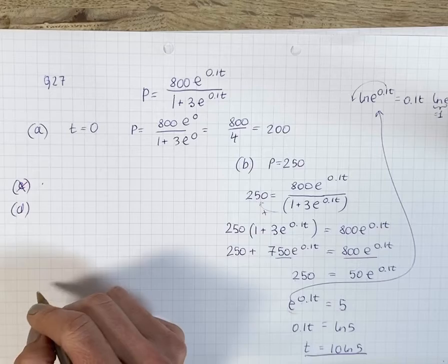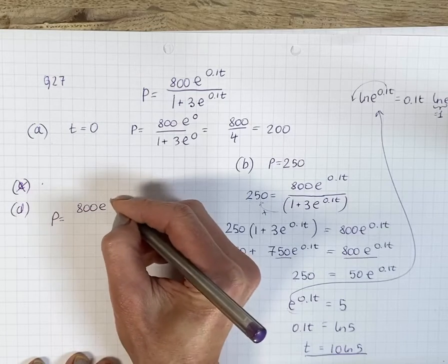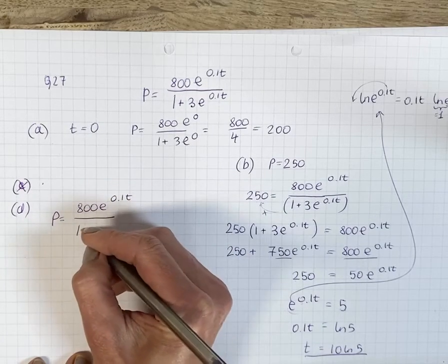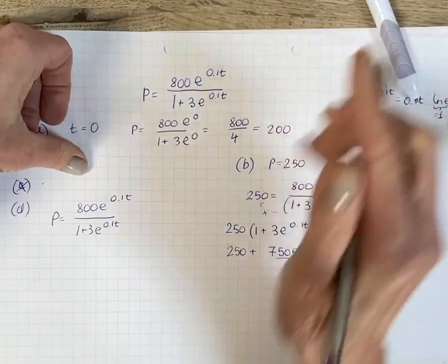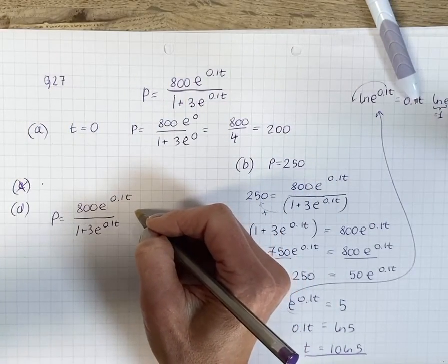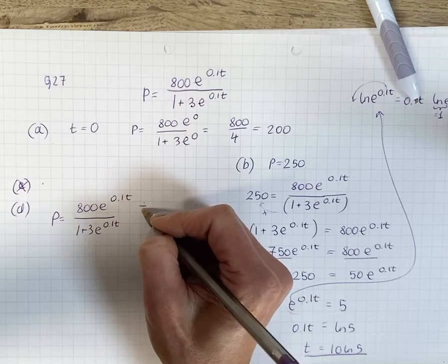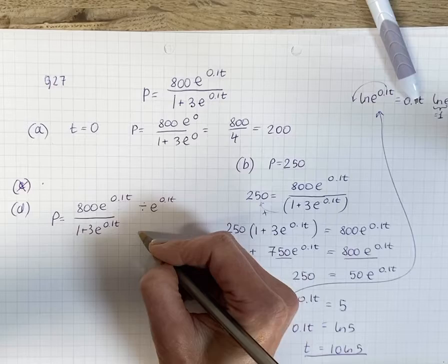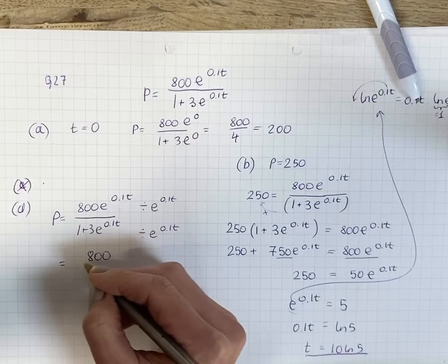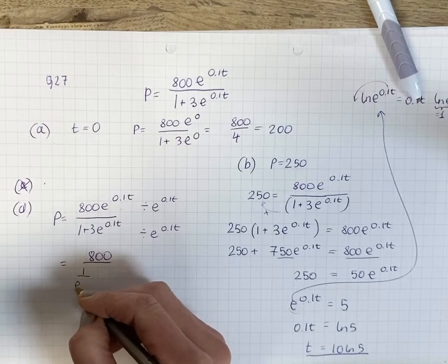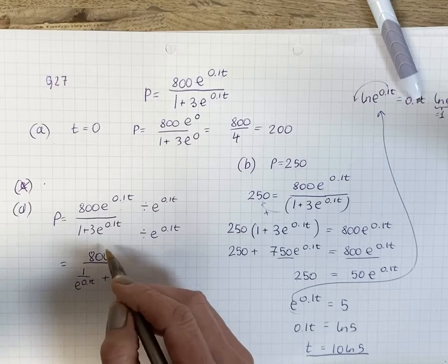So let's just do d: explain why the population of primroses can never be 270. So P is equal to 800 e to the power of 0.1t over 1 plus 3 e to the power of 0.1t. So the idea here is to multiply the top and the bottom—well maybe not multiply, we can multiply it by e to the power of minus 0.1t, but effectively you want to divide it by e to the power of 0.1t. Let's see what happens there. So you'll get 800 on the top and on the bottom you're going to get 1 over e to the power of 0.1t and then plus 3.